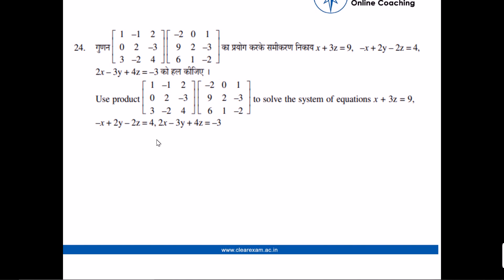So our 24th question is: use product of matrix, this and this. The first matrix is [1, -1, 2; 0, 2, -3; 3, -2, 4] and the second is [-2, 0, 1; 9, 2, -3; 6, 1, -2].